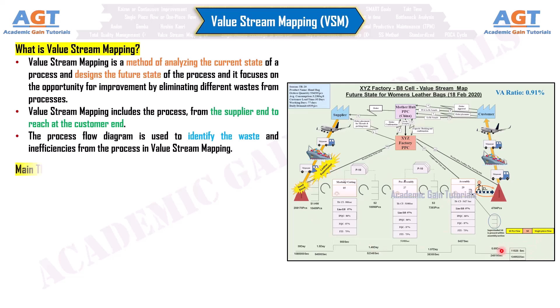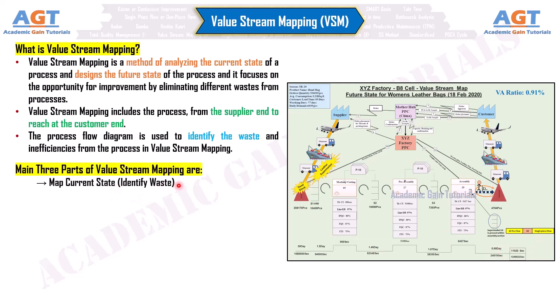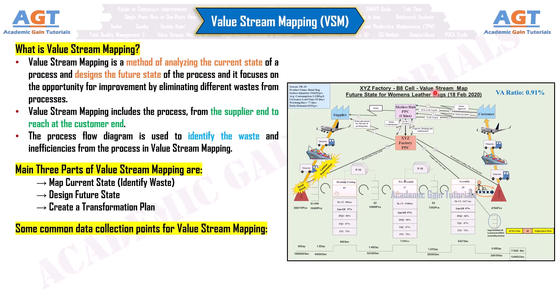The main three parts of Value Stream Mapping are: Map Current State, Identify Waste, Design Future State, and Create a Transformation Plan.